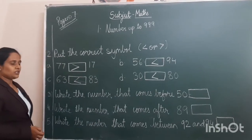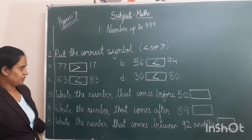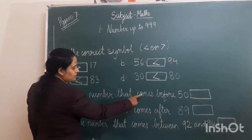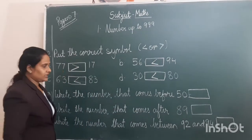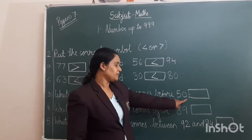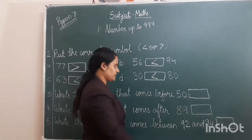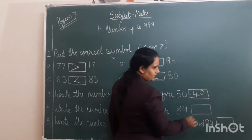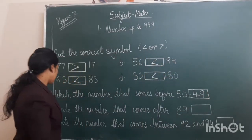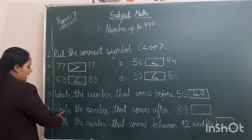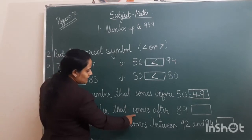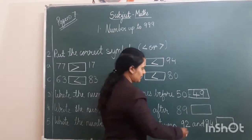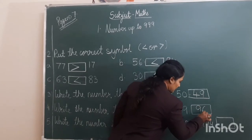Now we will do the revision of after and before numbers. Write the number that comes before 50. In this you have to write the number which comes before 50 — that is 49. Write the number that comes after 89. What comes after 89? 90.